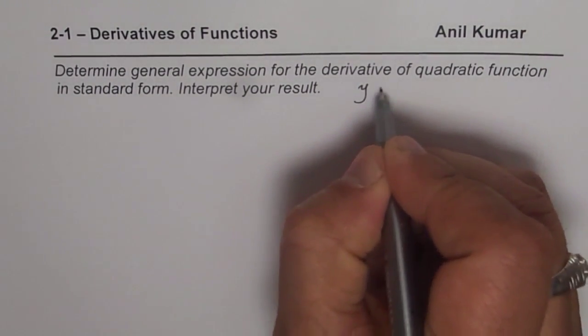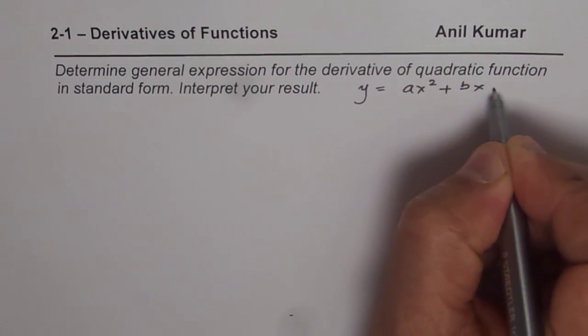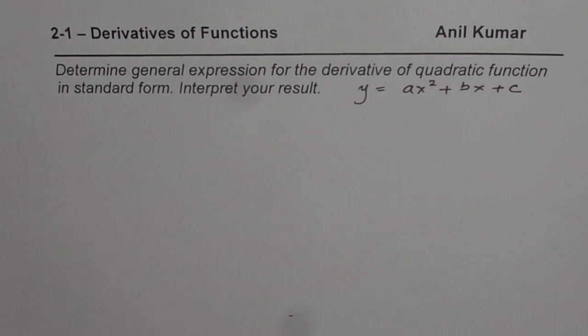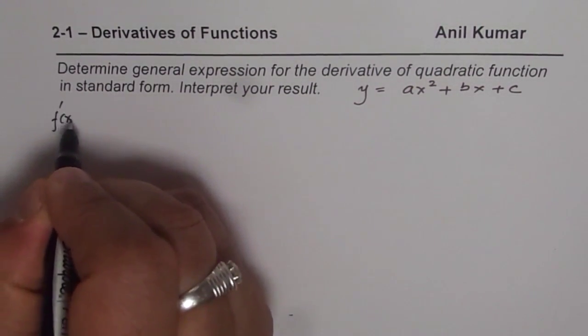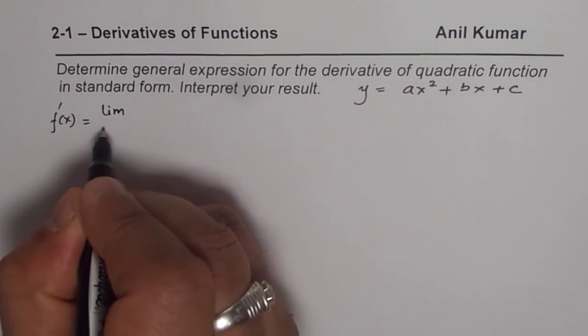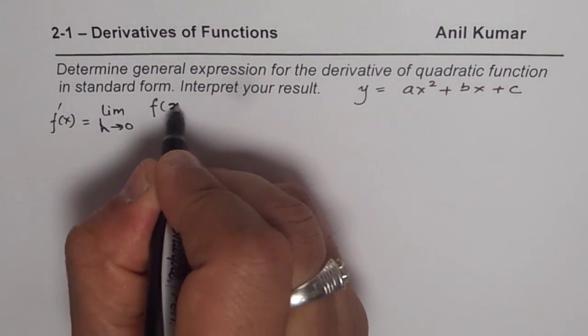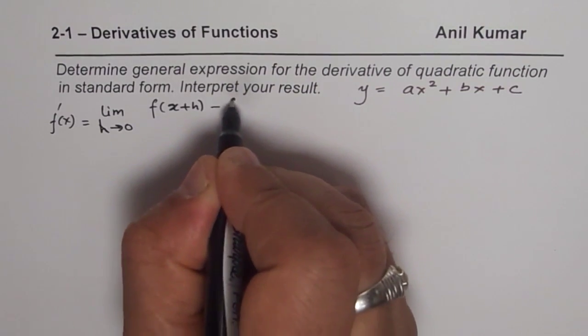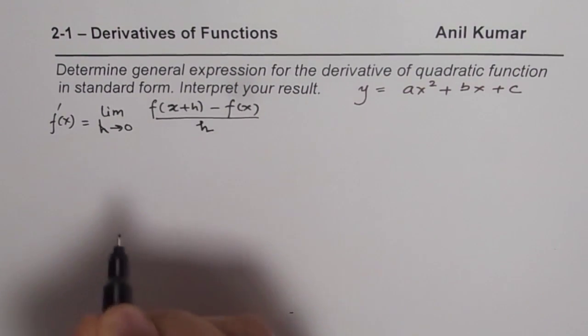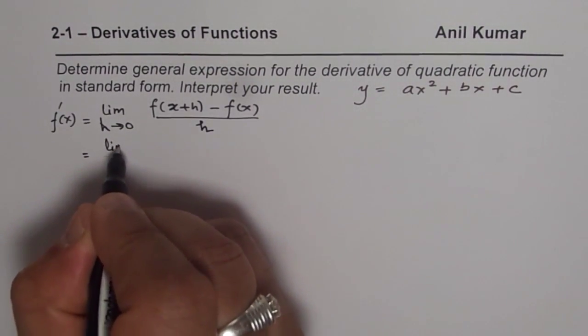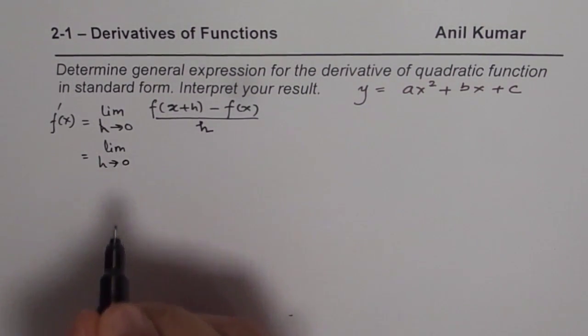So quadratic equation in standard form could be y equals ax square plus bx plus c. That is the equation on which we are going to work. So we say derivative is f dash x, which is defined as limit h approaches 0 of f of x plus h minus f of x over h. So that is a general expression. We'll use this equation and find the derivative at any point on this function, which is a parabola.